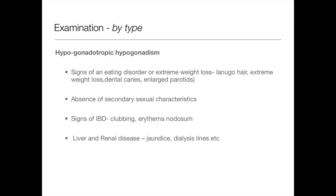Now let's go through examination by type. For hypogonadotrophic hypogonadism, look for signs of an eating disorder — do they look like they've lost a lot of weight? In anorexia, look for lanugo hair and extreme weight loss. In bulimia, look for dental caries from acid erosion and enlarged parotids. Look for absence of secondary sexual characteristics — any axillary hair developing, any breast formation. Look for signs of inflammatory bowel disease such as clubbing and erythema nodosum. Also look for signs of liver and renal disease — jaundice, dialysis lines.